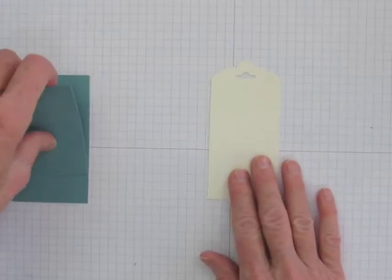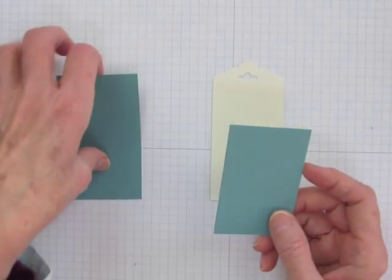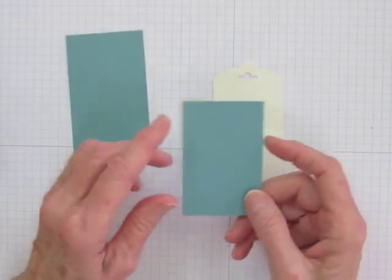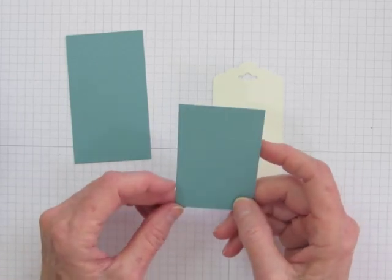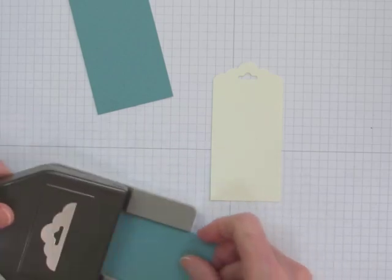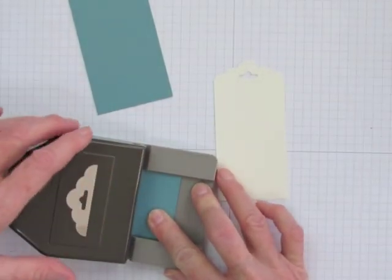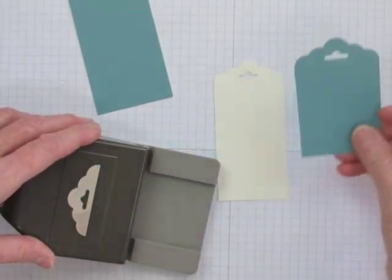Now I'll take a contrasting color cardstock for the mat and I've cut two pieces. One is two by two and a half and I'll go ahead and punch that with the scalloped tag topper punch and I'll set that aside.